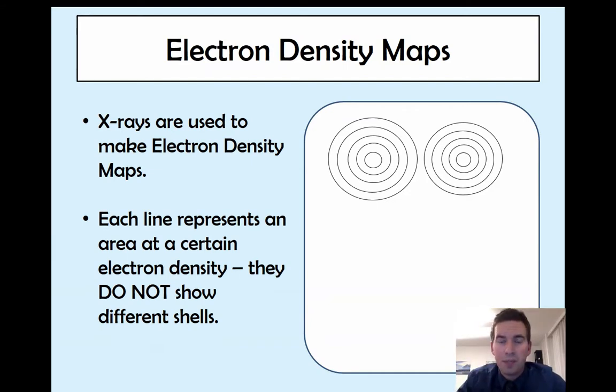Now this simplified map here shows a pure ionic bond. You can see that each of the ions is separate from each other. There's space in middle. When we get on to covalent bonding you'll see a different shape displayed by an electron density map. But for now we're just focusing on ionic bonds and ionic substances.